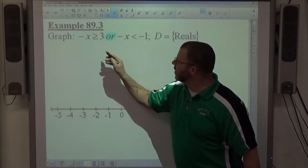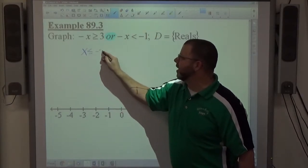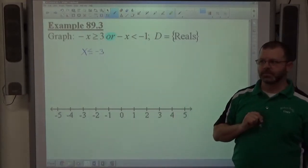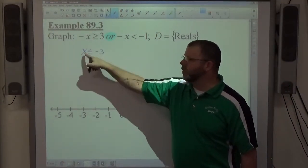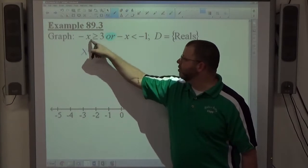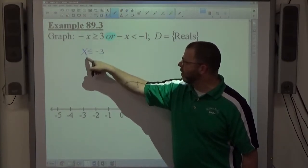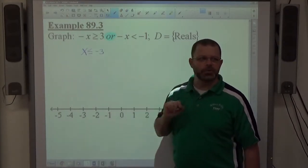Negative x greater than or equal to 3 is x is less than or equal to negative 3. Again, if you change the signs, which we need to because we want x, we don't want negative x. If you change the signs of both objects, the inequality flips direction. Equals to stays on it though.